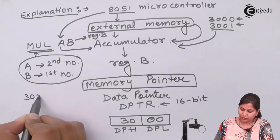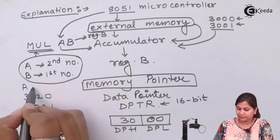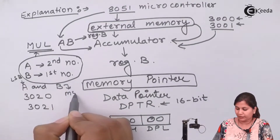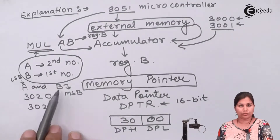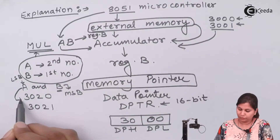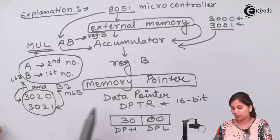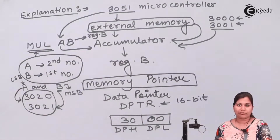The result of multiplication will also reside in the A and B registers. Register A will hold the least significant byte and register B will hold the most significant byte of the 16-bit result. The content of A will be stored at 3020H and B at 3021H. Since those locations are also in external memory, we will use DPTR again to store the result.